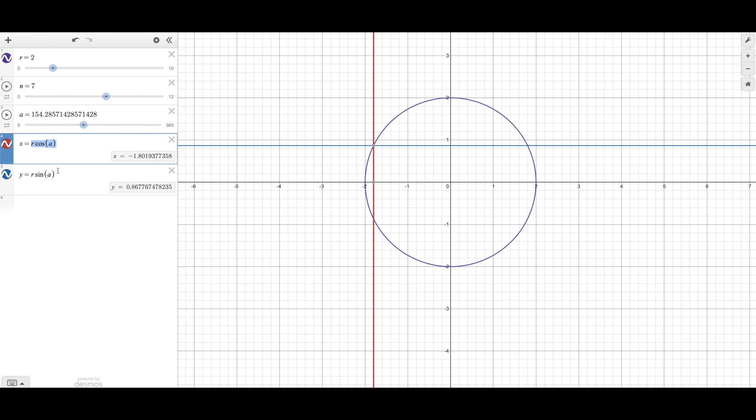So scale times cosine of theta, that will give you how far across it is, so it's negative 1.8 that way. And same for the sine, that will give you how much up it is, so it's 0.86. And that will give you this coordinate on the circle.